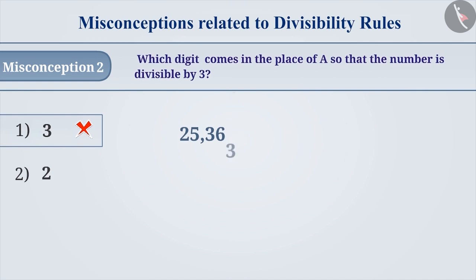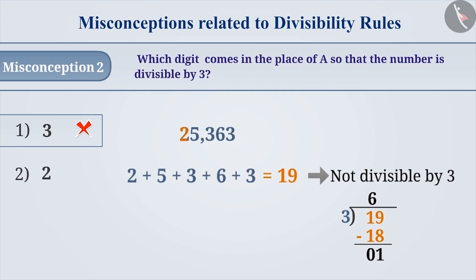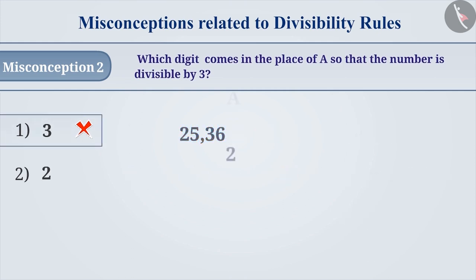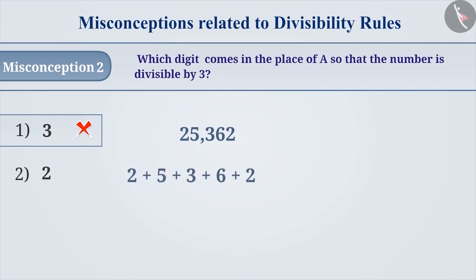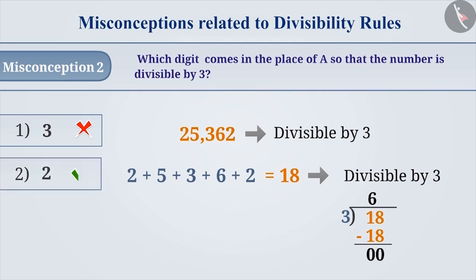To check the divisibility by 3, we will substitute 3 in the place of 'a' and find out the sum of the digits. The sum will be 19. Since 19 is not divisible by 3, 25,363 is also not divisible by 3. So, we cannot write 3 in the place of 'a'. Now, we will write 2 in the place of 'a' and find out the sum of the digits. The sum will be 18. Since 18 is divisible by 3, 25,362 is also divisible by 3. That means, we have to replace 'a' with 2. So, option 2 is the right answer.